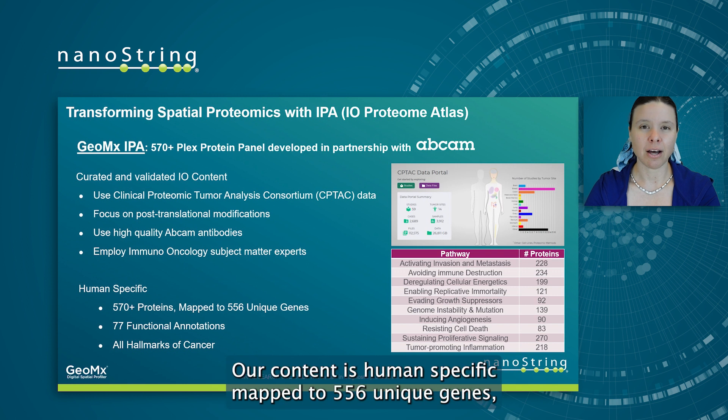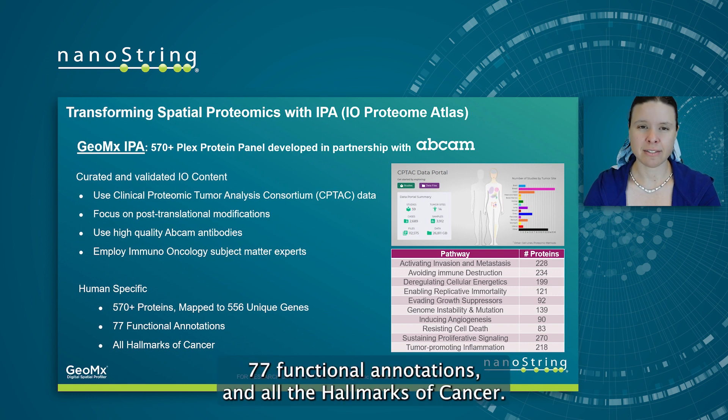Our content is human-specific, mapped to 556 unique genes, 77 functional annotations, and all the hallmarks of cancer.